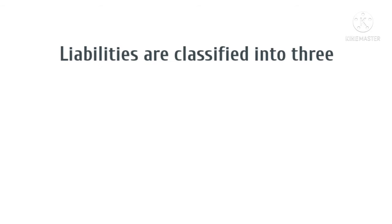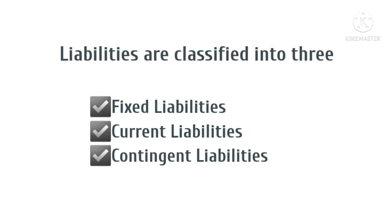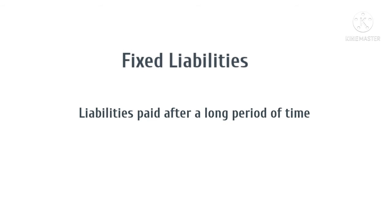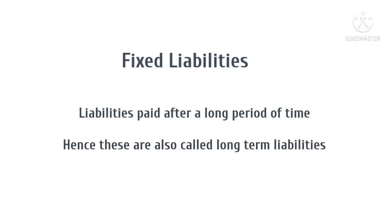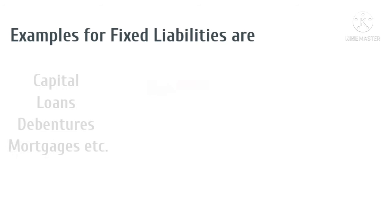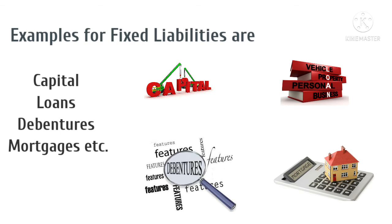Liabilities are classified into three: fixed liabilities, current liabilities, and contingent liabilities. Fixed liabilities are liabilities paid after a long period of time; hence, these are also called long-term liabilities. Examples of fixed liabilities are capital, loans, debentures, mortgages, etc.